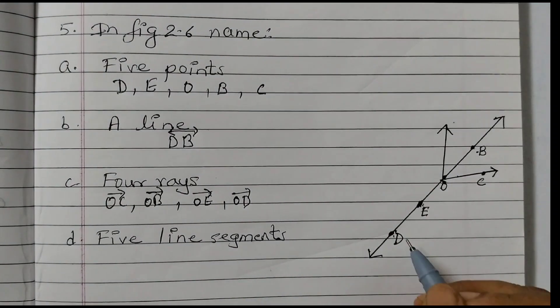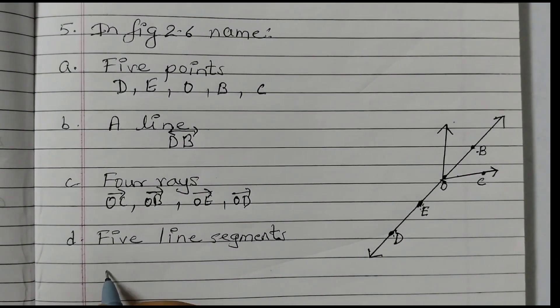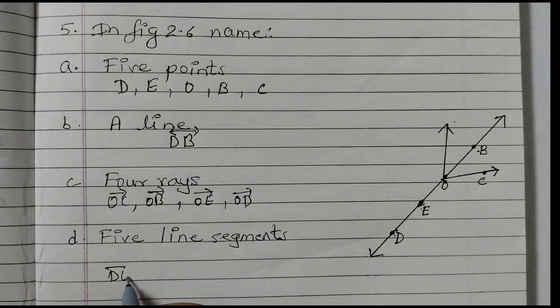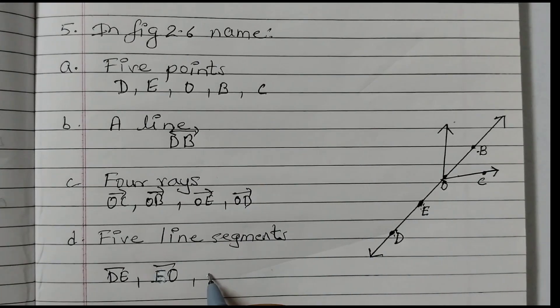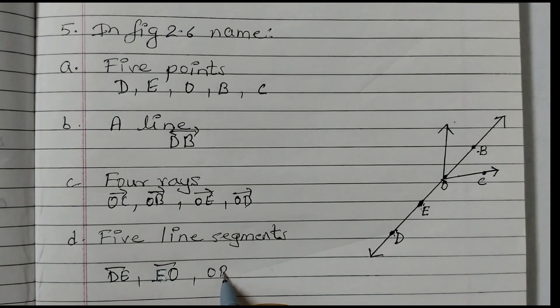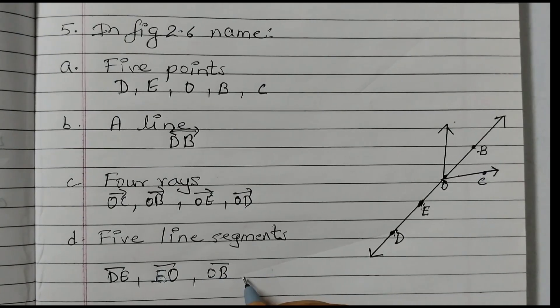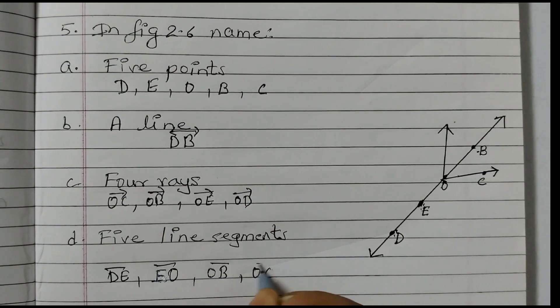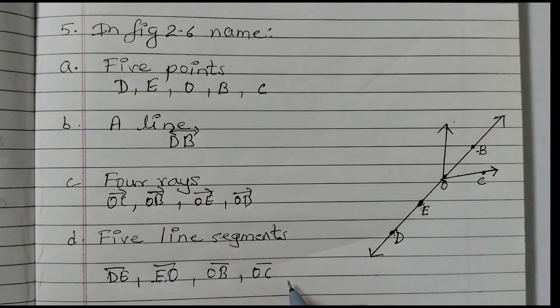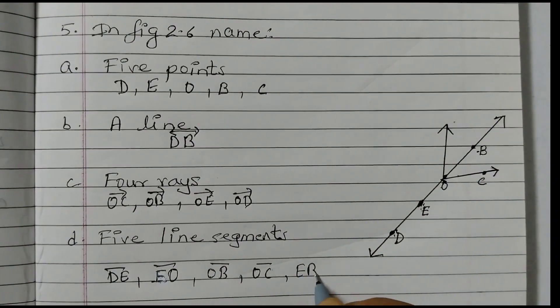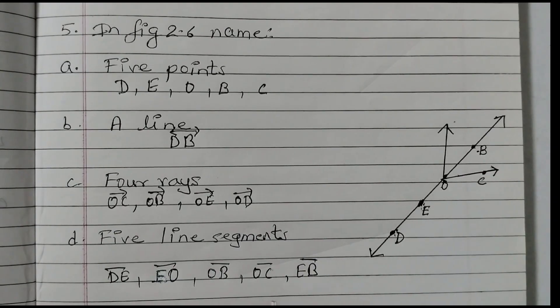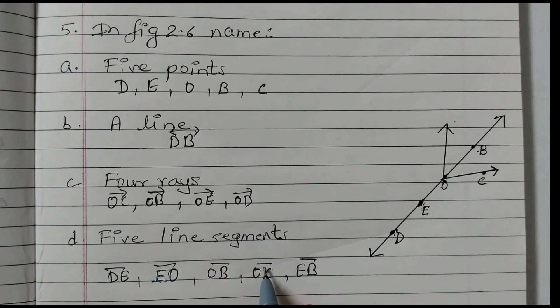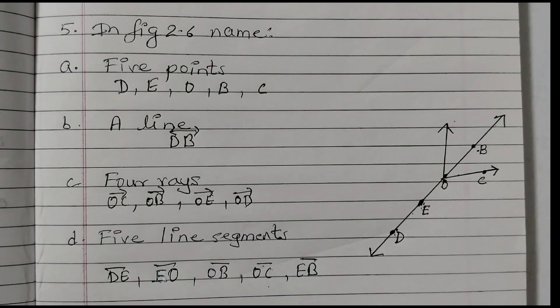Five line segments. So we can have DE. So that's line segment DE, EO, segment OB, segment OC. Then we can take EB. Again for this one you can have different answers. You can take any two points. And on top of this if you put the line segment like this, that would be the answer. Moving on to question number 6.